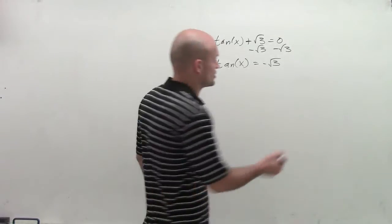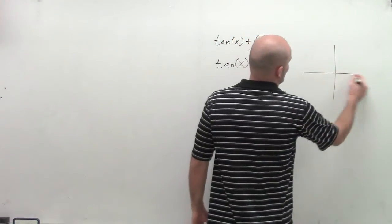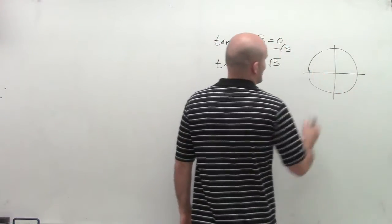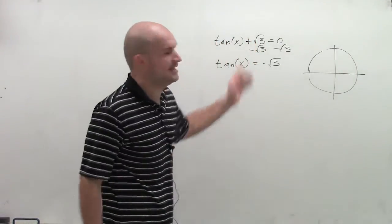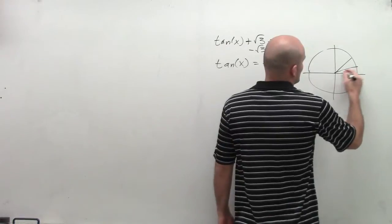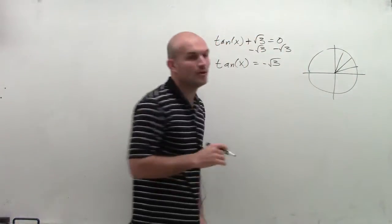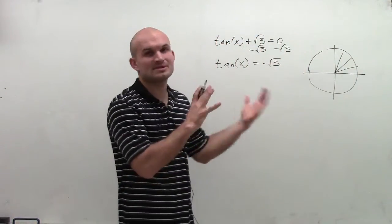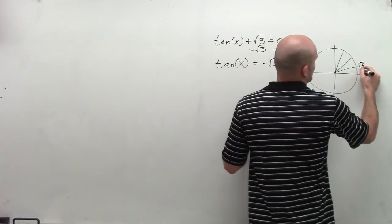So what I need to do is go back to my unit circle and decide when do I have a tan value that's going to be equal to negative square root of 3. I'm going to use my first quadrant, even though I know this is a negative point, so I can represent it roundly because I remember my points in the first quadrant.